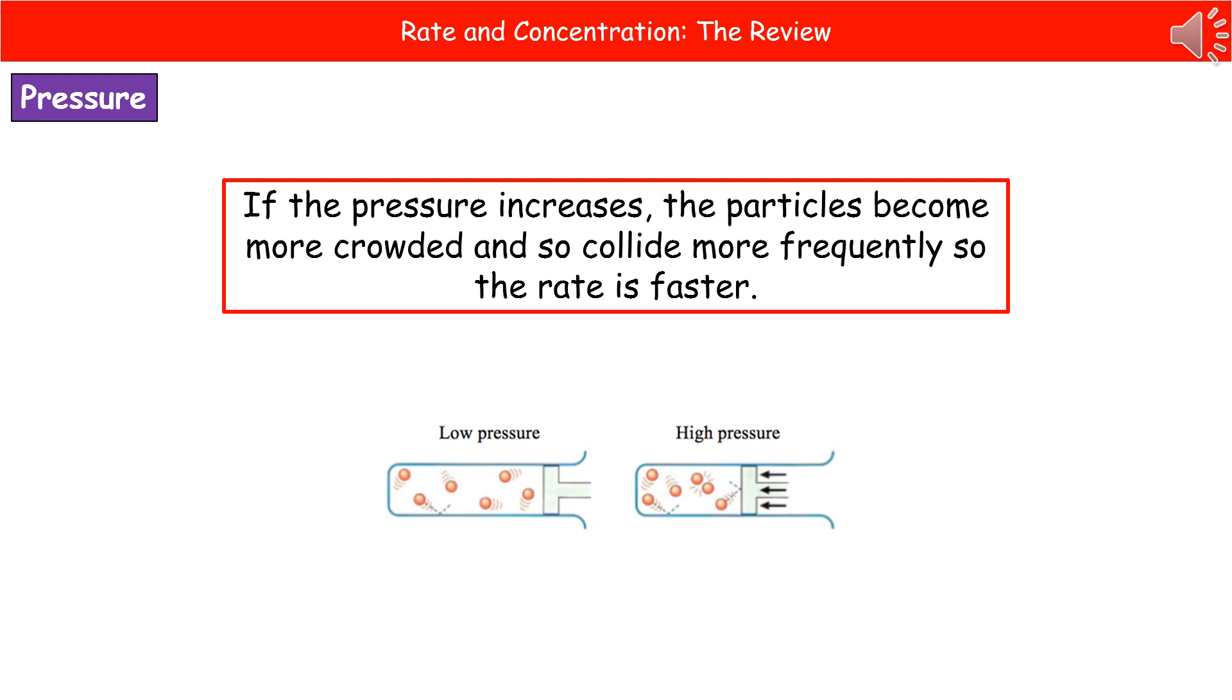The second scenario we need to consider here is what happens when we're talking about a reaction mixture and we increase the pressure. If we increase the pressure, then the particles become more crowded and so they collide more frequently. So we end up with an increased rate of reaction. Increasing the pressure increases the rate of reaction because the particles are more crowded and so have more frequent collisions.